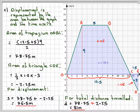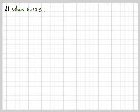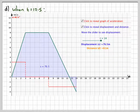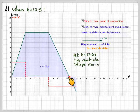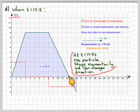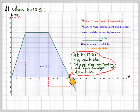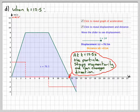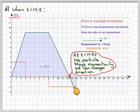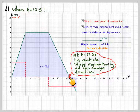We're asked to consider when T is equal to 12.5 seconds. At this point, the velocity becomes zero, so the particle stops momentarily and then changes direction. The particle is slowing down, stops, and then accelerates in the opposite direction. The acceleration is working against the velocity up to this point, and then works with the velocity as both are in the negative direction. So at t = 12.5, the particle changes direction.